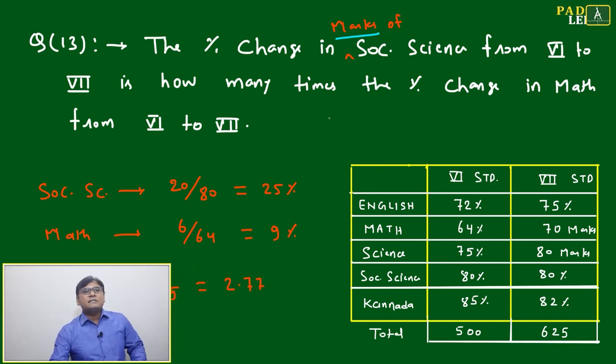The percentage change in marks of Social Science from VI to VII: Social Science is 80%, here it is 80%. Both are the same, but they are asking for marks of Social Science. If it is not mentioned as marks, then we can say 80 to 80 percentage change would be zero.